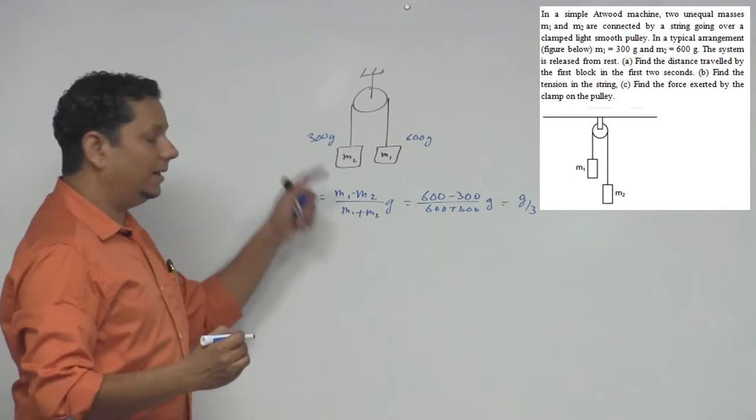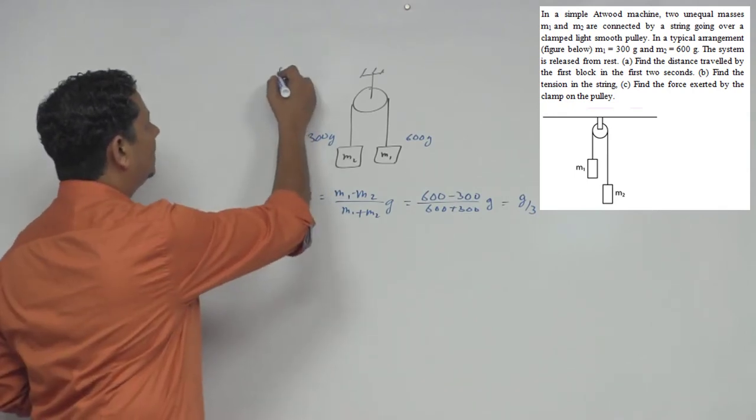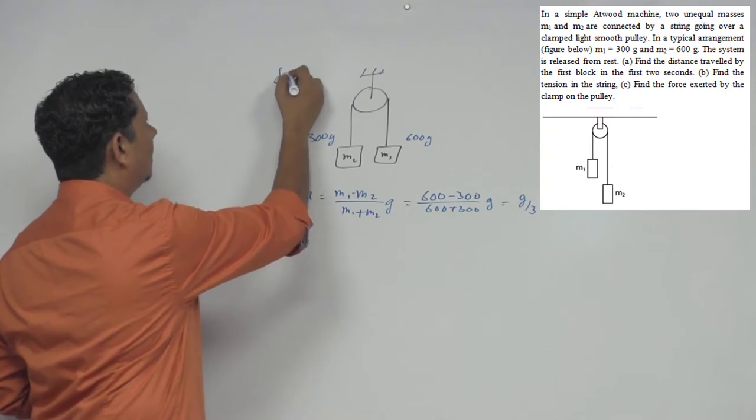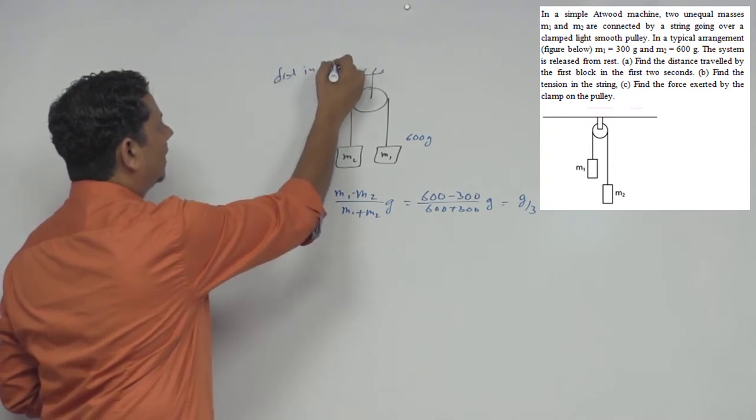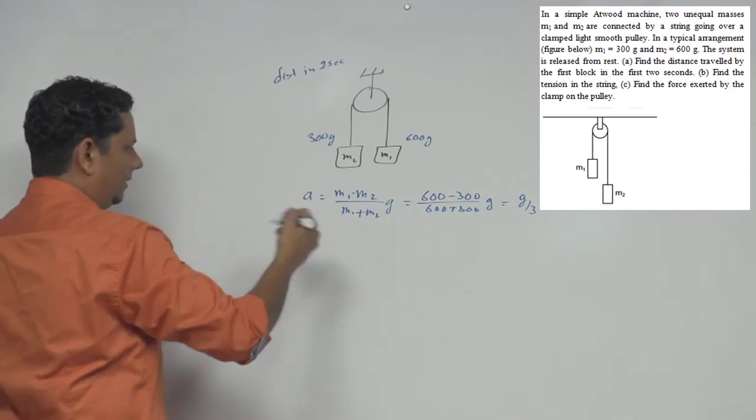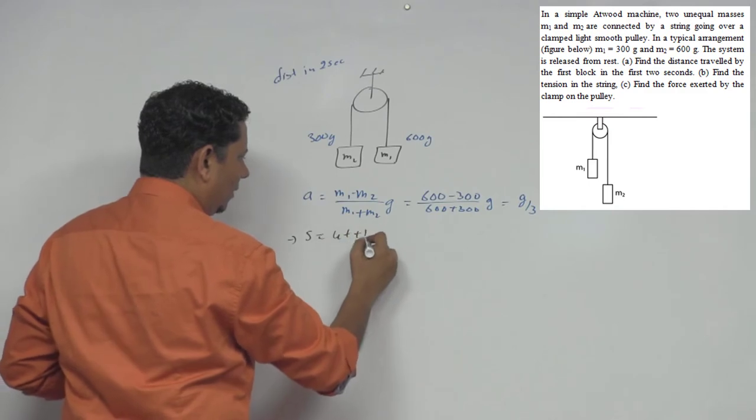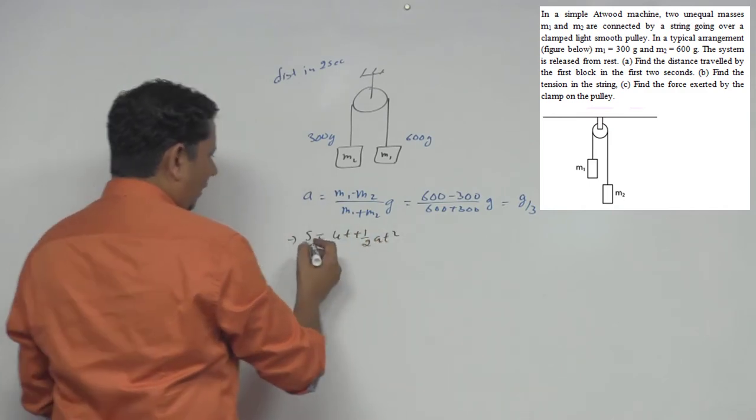Now for acceleration in 2 seconds, distance traveled in 2 seconds. Distance s equals ut plus half a t squared.